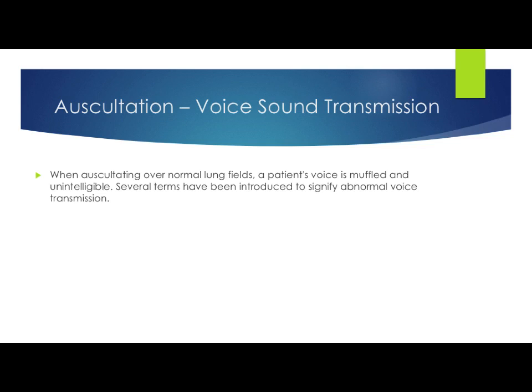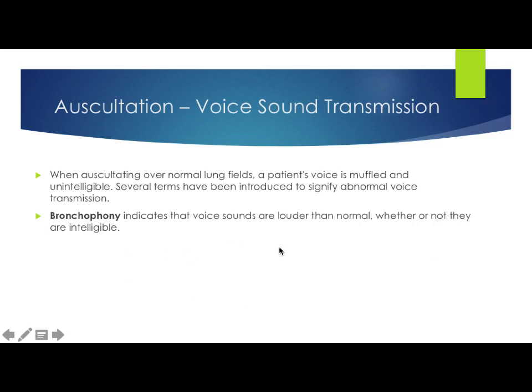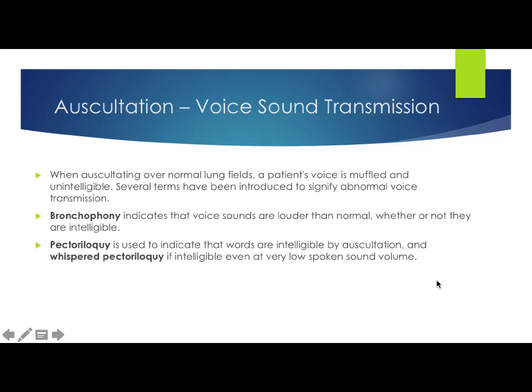When auscultating over normal lung fields, the patient's voice is muffled and unintelligible. Several terms signify abnormal voice transmission. Bronchophony indicates that a voice sounds louder than normal — if you ask a patient to say '99' and it's louder in one spot than another, that's positive bronchophony. Pectoriloquy — which is Latin for 'voice of the chest' — means words are intelligible by auscultation. Whispered pectoriloquy is intelligible even at low spoken volumes: if a patient whispers 'one two three' and it's clearly audible through the stethoscope, that's positive.